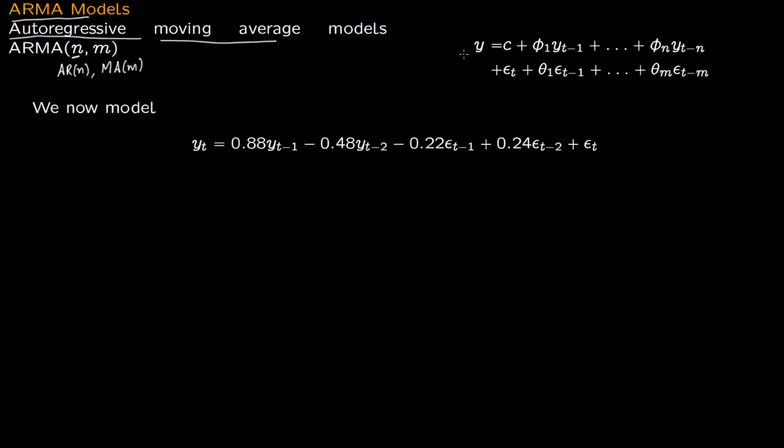The model could be Y equals c plus φ₁Y(t-1) all the way to φₙY(t-n). This is the autoregressive part with n lags. You also add to it a moving average model with m lags.